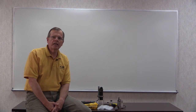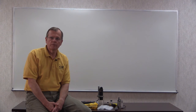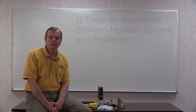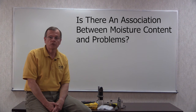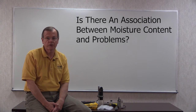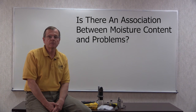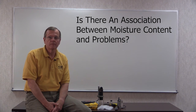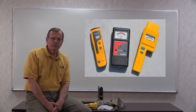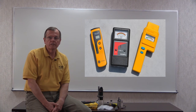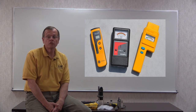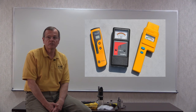When examining coating problems on a floor, it's helpful to determine if there is an association between moisture content and the locations where the problems are occurring. This is especially important for slabs that are on grade. There are a number of ways to determine the moisture content of floors. For quick comparative assessments, moisture meters are preferred because they provide instantaneous results.